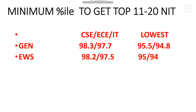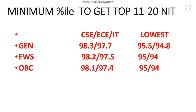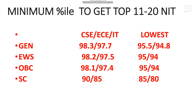If you want to check your category rank based on those percentiles, watch my video on percentile versus category rank — you'll get the corresponding SC, ST, or EWS rank for a given percentile; link is in the i-button and description box. For OBC: 98.1 and 97.4 — scoring those percentiles keeps you safe for at least EC; above that you can be confident about CS or IT; for lowest 95 and 94. For SC: 90 and 85 percentile required; for lowest 85 and 80. For ST: 90 and 84; for lowest branch 85 and 79 percentile required.